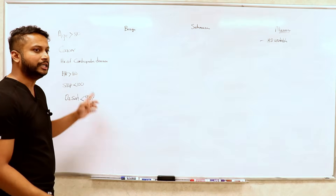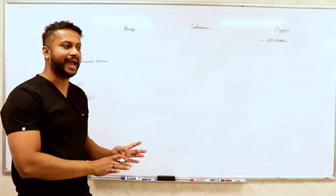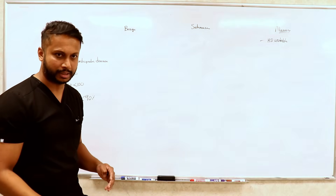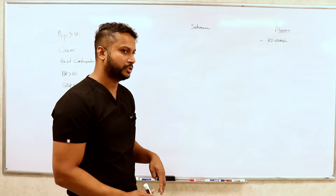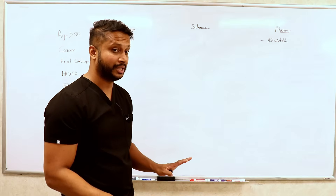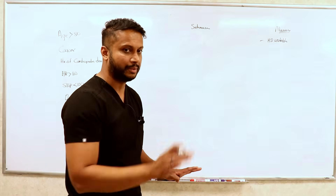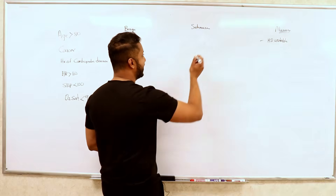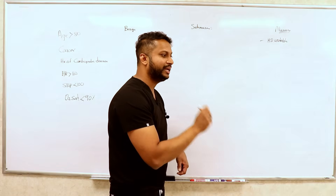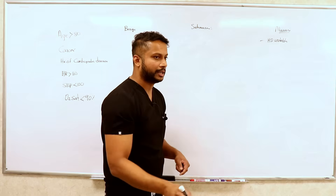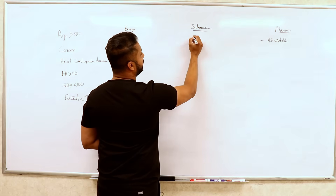When it comes to a benign PE, it's just a small blood clot that sits in your lungs — it's not causing any strain on your heart. When it comes to sub-massive, are you going to be hemodynamically stable? Yes, because massive is the only one that will be hemodynamically unstable. When you say sub-massive, you are hemodynamically stable but the clot is big enough that it's causing problems on your heart.